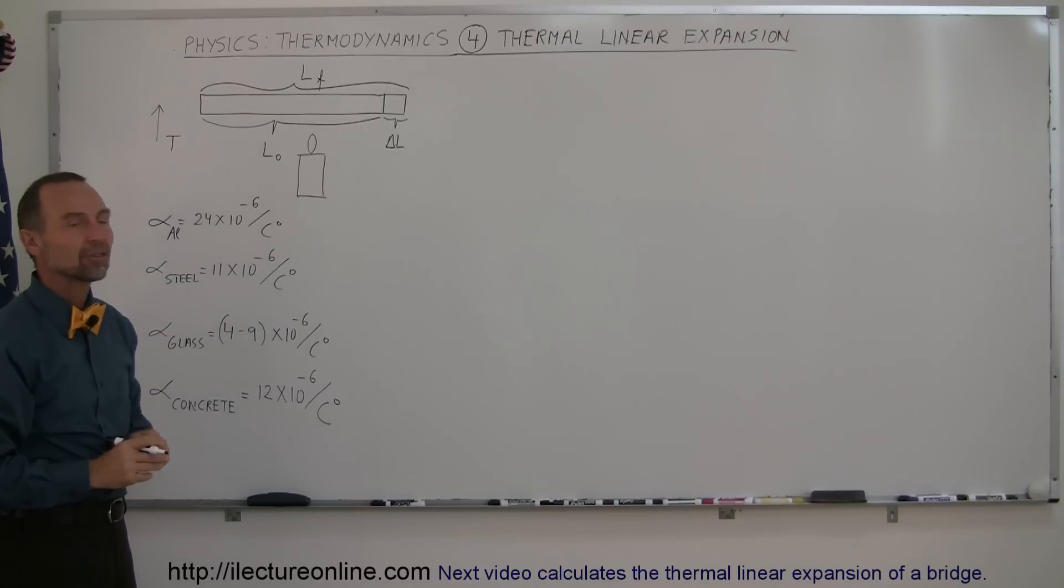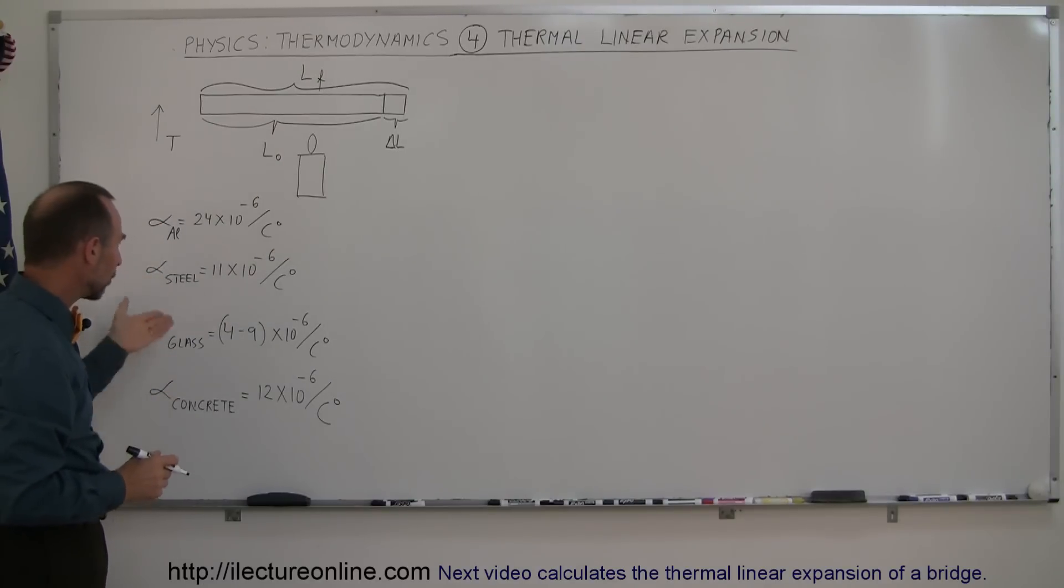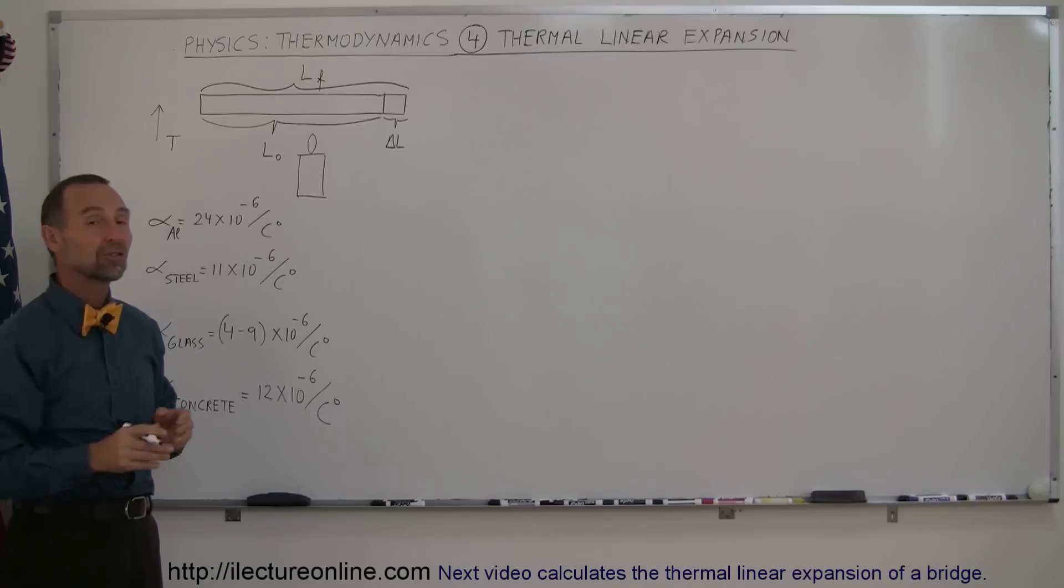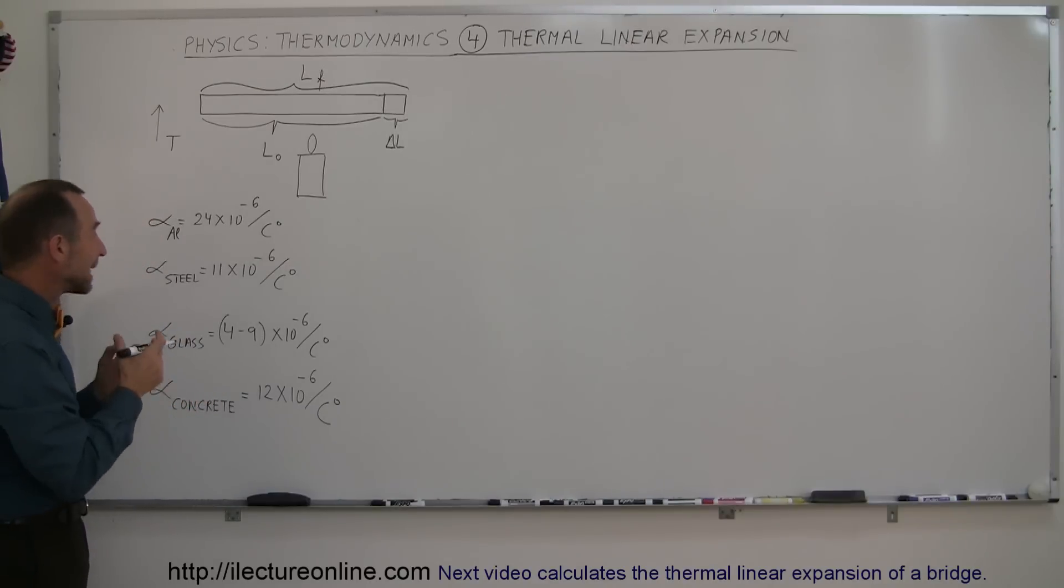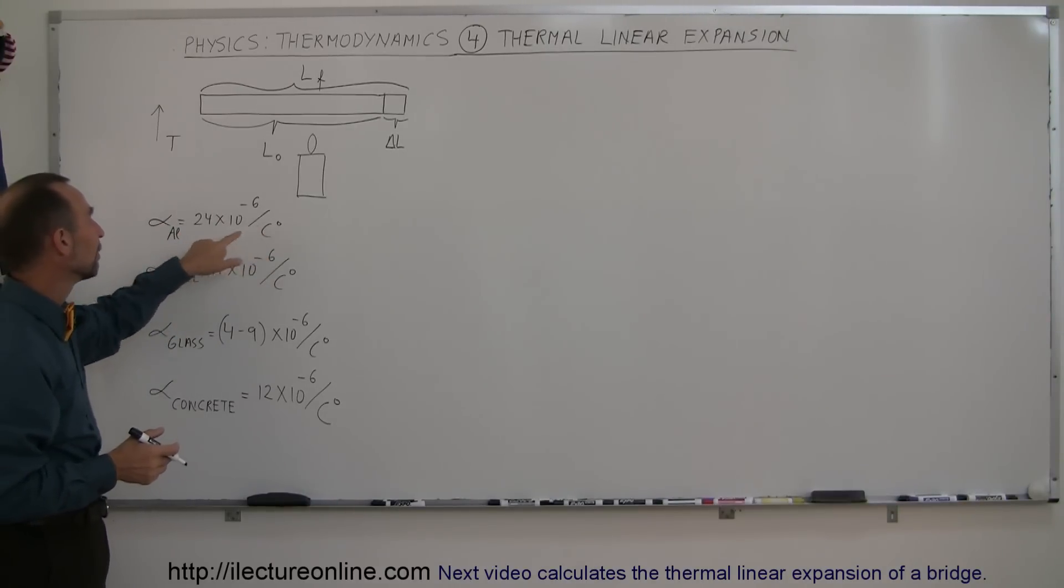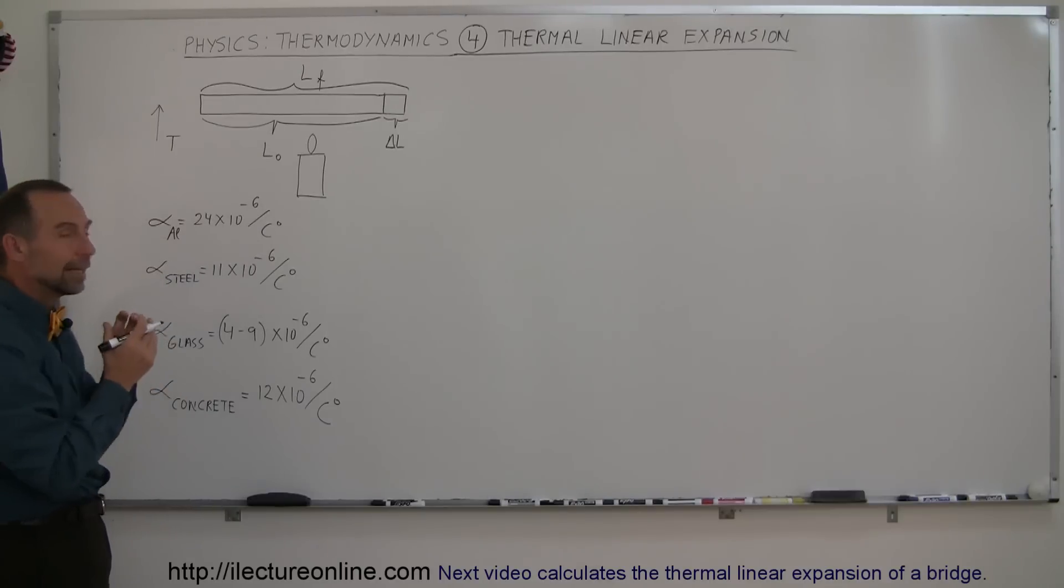And here I've written down some coefficients of linear expansion. Different materials will react differently to an increase in temperature. And so you can see that for every one degree Celsius, for aluminum the object will be longer by this amount relative to its original size, and we'll talk about that a little bit more in just a moment.